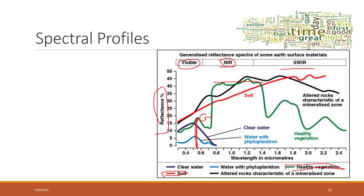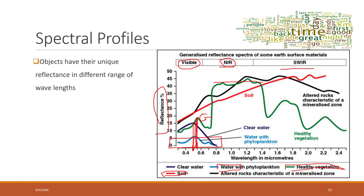If we look at water, it generally has lower reflections overall, but has relatively higher reflection in the blue band. Clean water has the lowest reflections in the near-infrared band. So the spectral profile shows that objects have unique reflections across different wavelength ranges, and those unique features help us distinguish between objects.